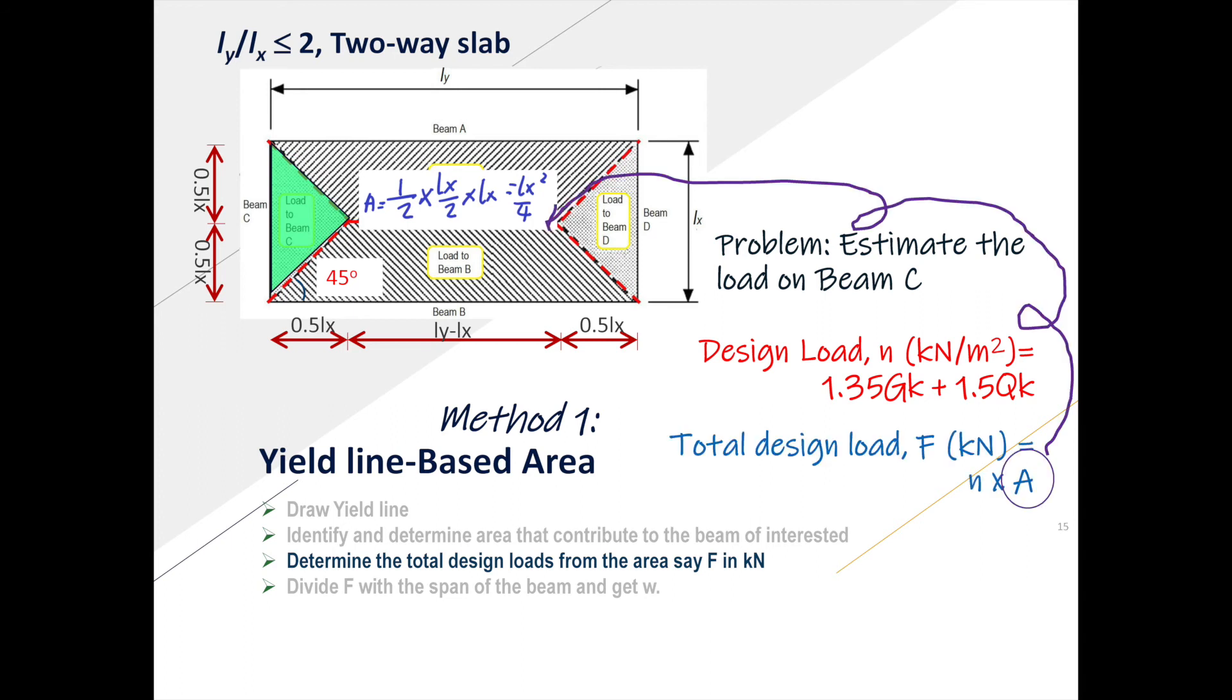Then we can obtain the design load in kN, F, by multiplication of the design area load with the area of interest.